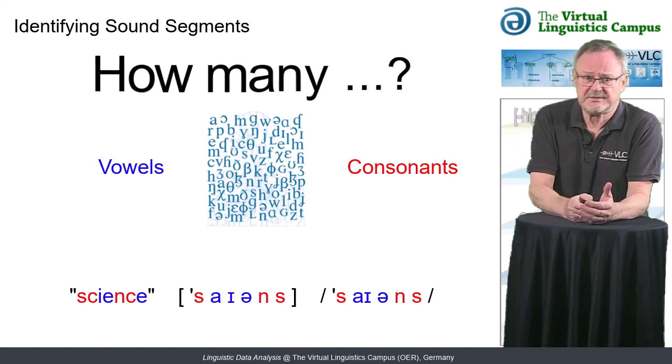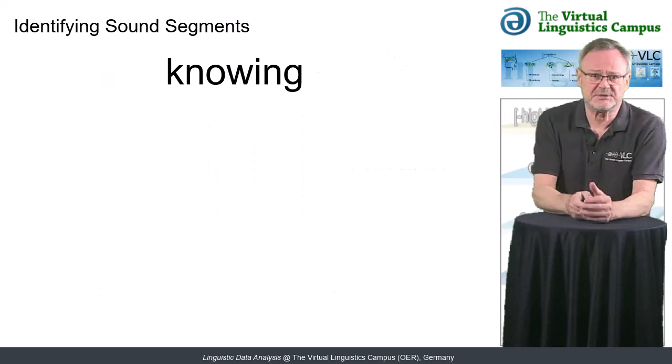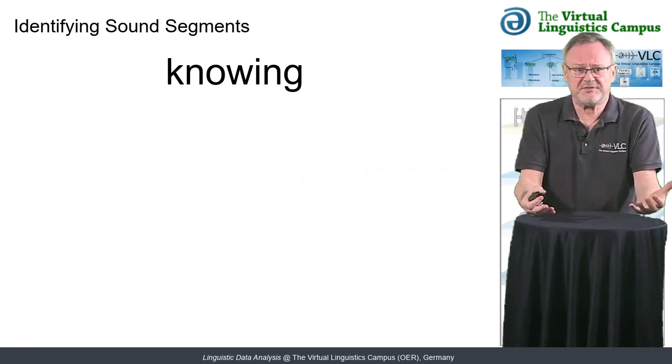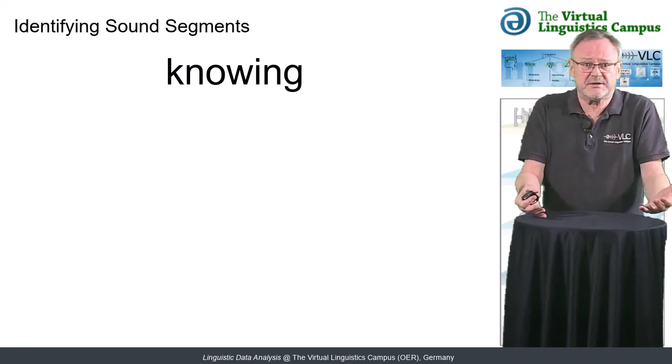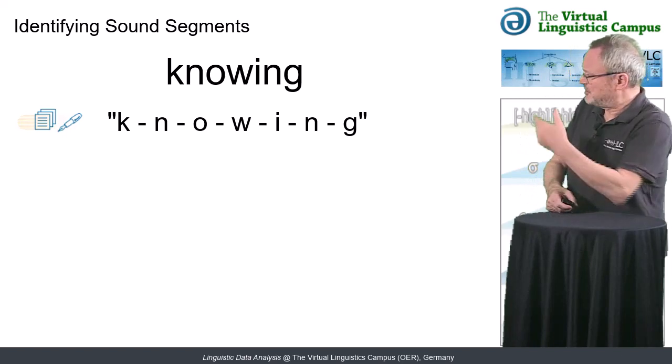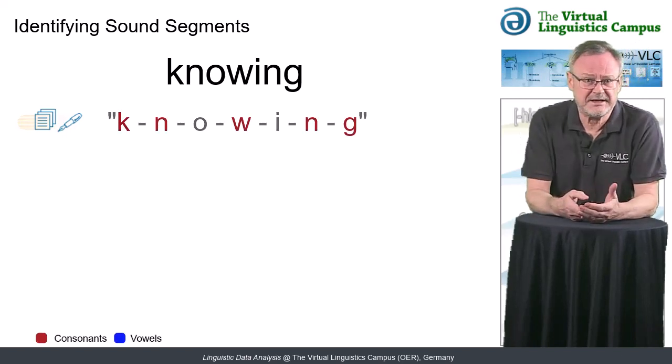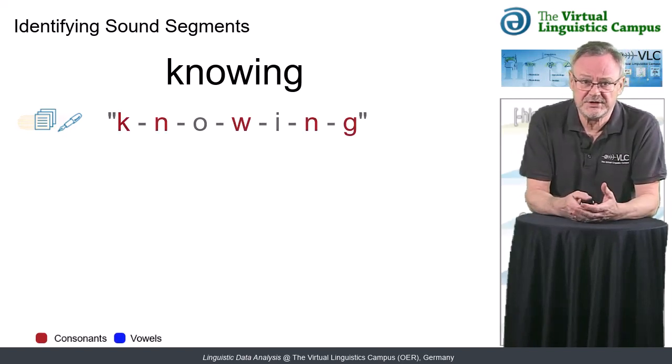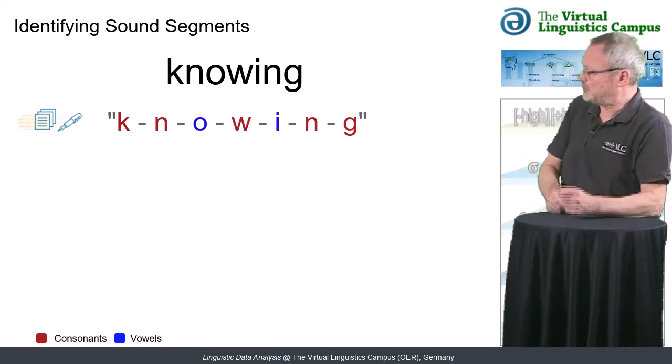Let's take the English word knowing as an example. From an orthographic point of view the matter seems clear. We simply count the letters and the result is five consonants and two vowels.